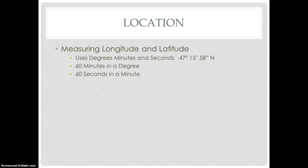To measure longitude and latitude precisely, you use degrees, minutes, and seconds. For example, a coordinate might read 47 degrees, 15 minutes, and 58 seconds. There are 60 seconds in a minute and 60 minutes in a degree, and coordinates are written out in that form.